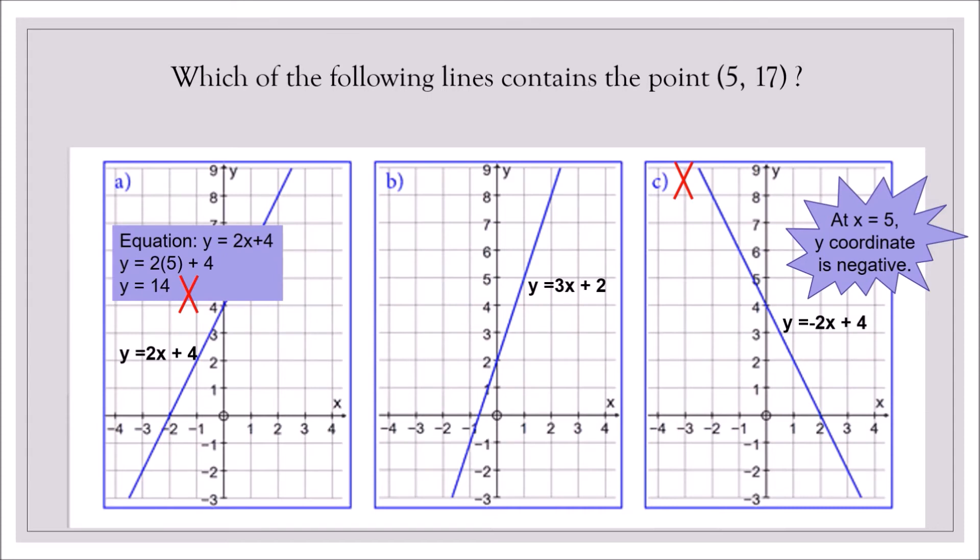We will be thinking that choice B is the correct answer. Let's verify. Let us substitute 5 into the equation y equals 3x plus 2. So we will have 3 times 5 plus 2. 3 times 5 is 15 plus 2, that's 17. Exactly the y value given in our point. So yes, option B is the correct answer. That means the line y equals 3x plus 2 contains the point 5, 17.